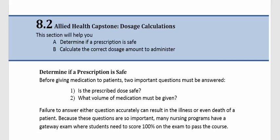8.2 Allied Health Capstone Dosage Calculations. This section will help you determine if a prescription is safe and calculate the correct dosage amount to administer. Before giving medication to patients, two important questions must be answered: Is the prescribed dose safe? And what volume of medication must be given? Failure to answer either question accurately can result in illness or even death of a patient.